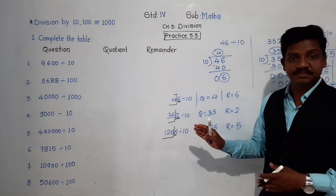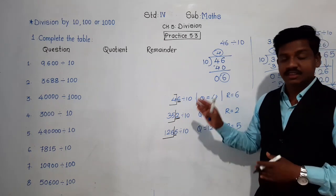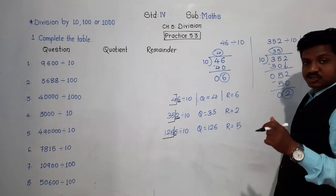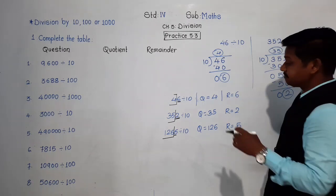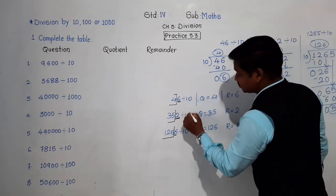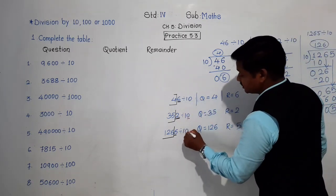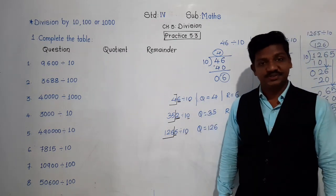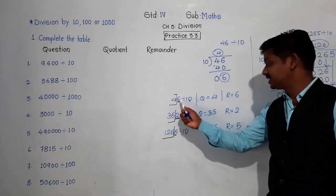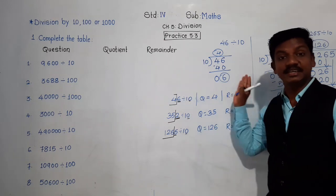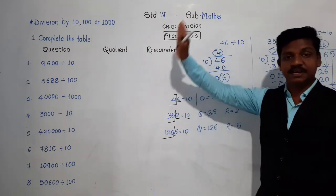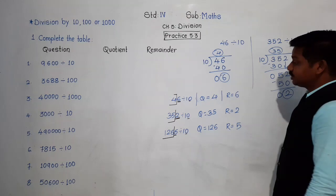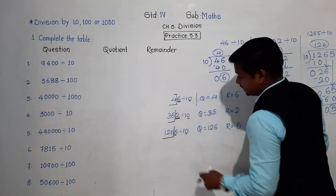This is the shortcut. Why only the last digit? There is logic behind it. In 10 there is one zero — only one zero. So the last one digit is the remainder, and the rest part of the number is the quotient. Then instead of 10, if there is 100, what will happen?